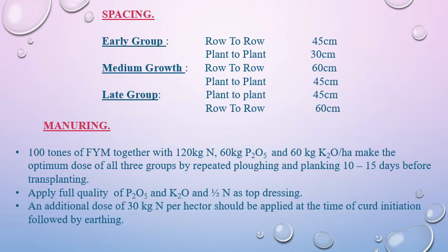Manuring: 100 tons of FYM together with 120 kg nitrogen, 60 kg P2O5, and 60 kg K2O per hectare make the optimum dose for all three groups. Apply full quantity of P2O5 and K2O and half of nitrogen as top dressing, 10 to 15 days before transplanting. An additional dose of 30 kg of nitrogen per hectare should be applied at the time of curd initiation, followed by earthing up.